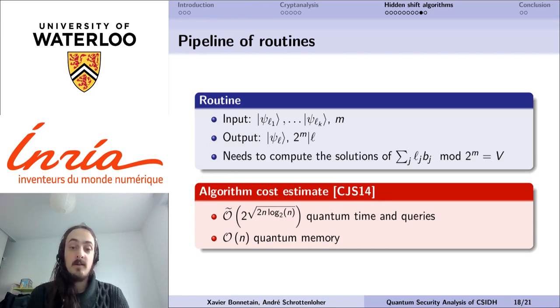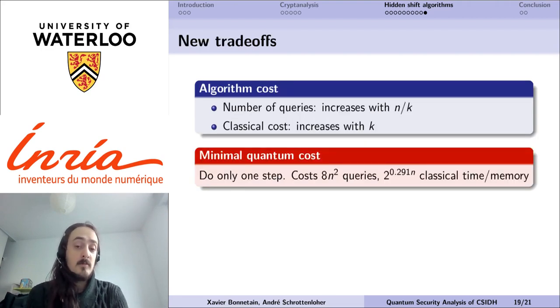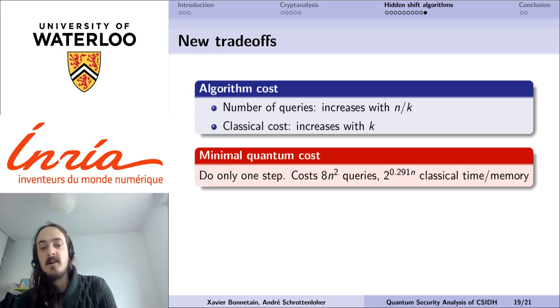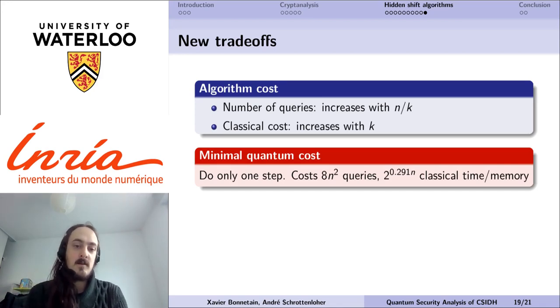Now we can remark that we have in fact a lot of possible ways to make this algorithm work, and in particular we can play on the size of the number of qubits we combine. If we increase the number of qubits we combine at each step, then we will increase the classical cost, but on the other hand it will allow us to perform less steps which will decrease the number of required queries.